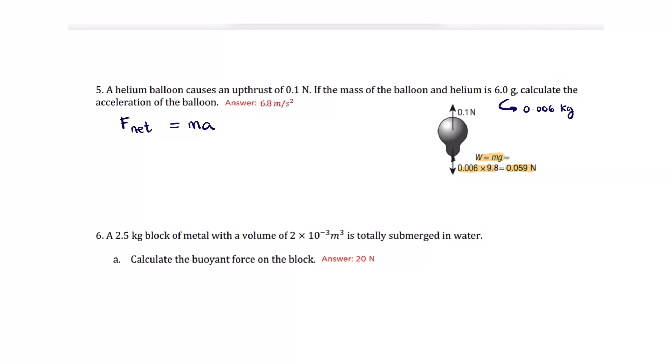We have the upthrust, which is directed upward, so I'm going to have it positive. This is the upward force. Minus the weight of the balloon, so minus W equals M times A, or the mass of the balloon times the acceleration of the balloon.